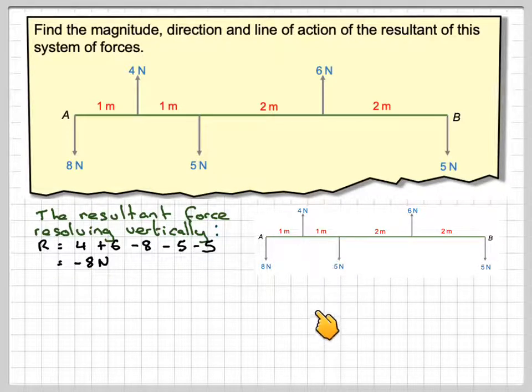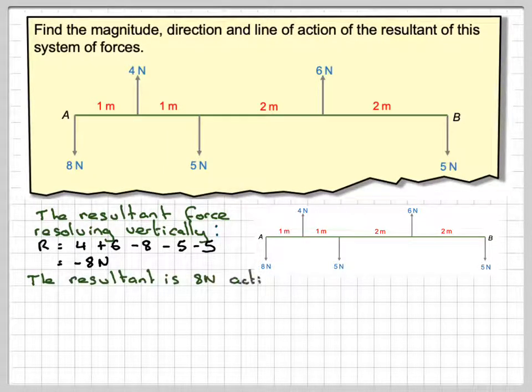Now the minus sign means it's acting downwards and it will be eight newtons downwards. And we want to know where does this force need to be applied as the resultant of this system of forces. So the resultant is eight newtons acting downwards, the minus sign means downwards.